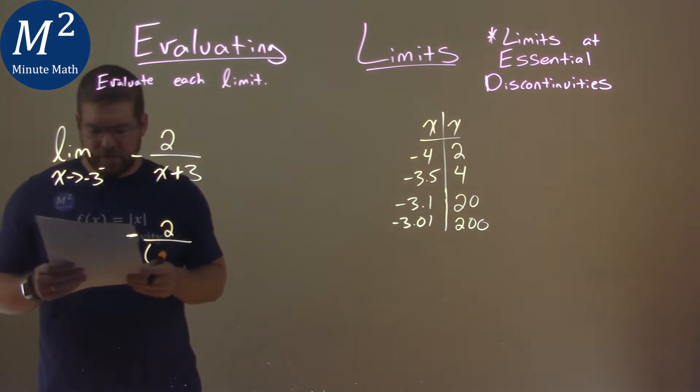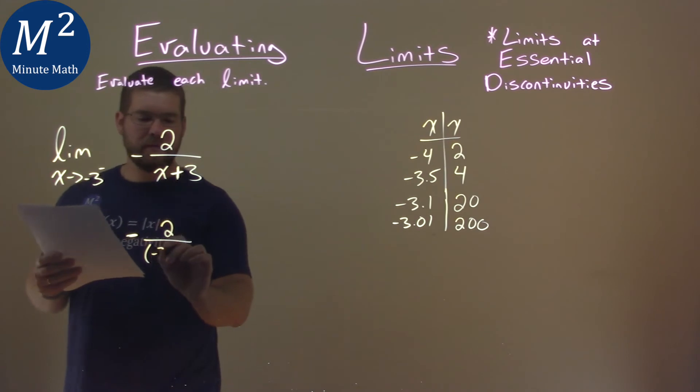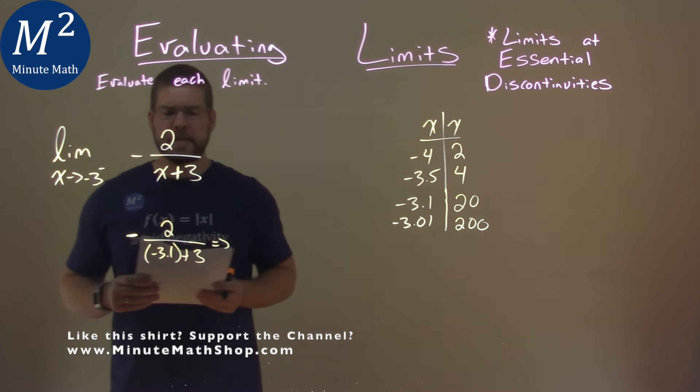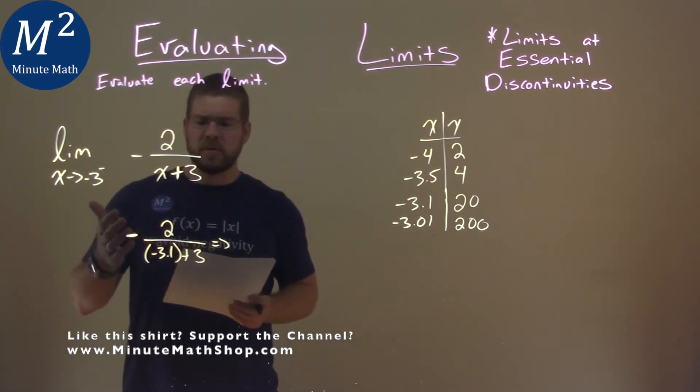And I'm going to put a value just to the left of negative 3, which is negative 3.1, for our x value. And now what I'm looking for is, is our overall result positive or negative?